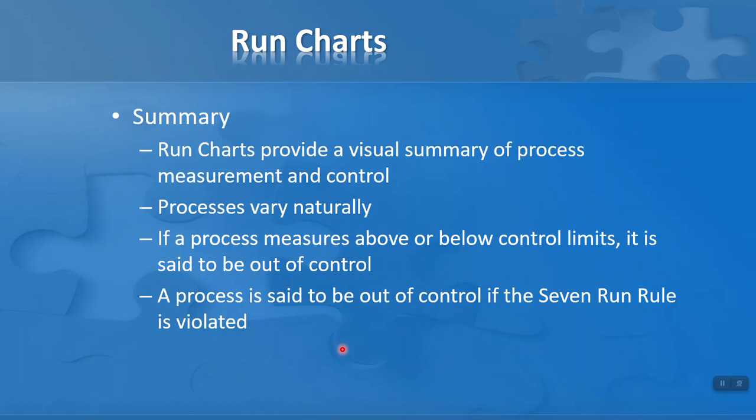In summary, run charts provide a visual summary of a process measurement and control. We know processes vary naturally, so we can expect some variation. But if a process measures above or below the control limits, it's said to be out of control. Finally, a process is also said to be out of control if the seven run rule is violated. So that's how you use run charts for problem solving. I hope you found this video useful.